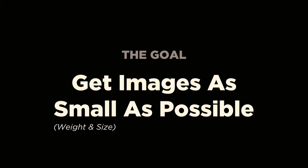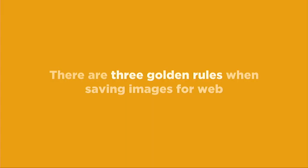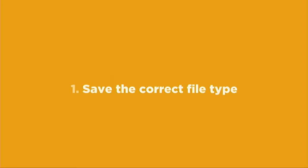Now that we have a base understanding of image file types — JPEGs for full-color photography, PNGs for graphics, SVGs for crisp vectors — how do we start saving for the web? The goal is to get images as small as possible. The smaller our images, the faster the page loads, especially since modern web design relies heavily on images for white space, clean typography, and conveying emotion. 'Smallest possible' means both the file weight and the actual pixel dimensions.